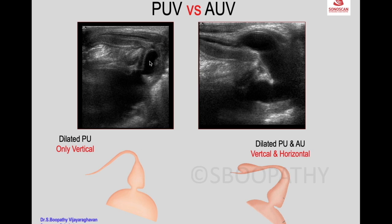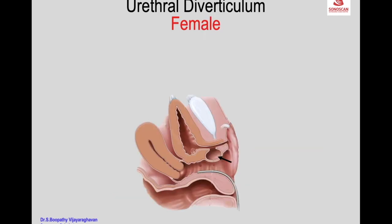In anterior urethral valves, the posterior urethra as well as part of the anterior (horizontal) urethra is also dilated to varying extent — that is the key difference. Urethral diverticulum usually occurs in females. The incidence is very rare and it can be congenital or acquired, presenting as recurrent UTI, dysuria, post-void dribbling, dyspareunia, or acute retention.